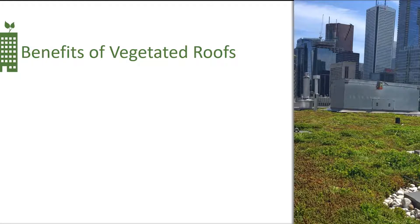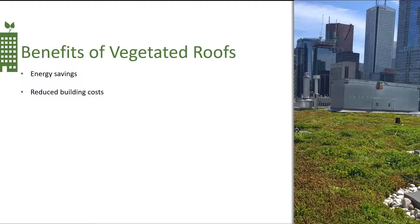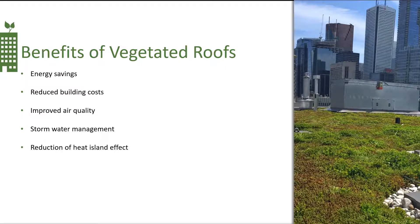Vegetated or green roofs are one of the technologies that fit into the green infrastructure and living architecture industries. Green infrastructure is defined as bringing living resilient vegetation to the built environment, which provides natural solutions to the challenges of gray development. There are many benefits of green roofs. As we install green roofs, building owners may see energy savings and therefore reduced building costs. As plants evapotranspirate, they improve the air quality, cool the environment, and utilize rain during stormwater events. Because green roof temperatures mimic the ambient air temperature, they reduce the urban heat island.